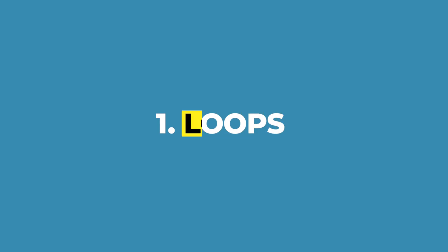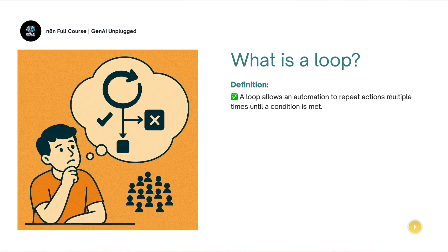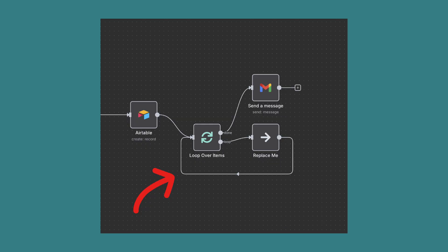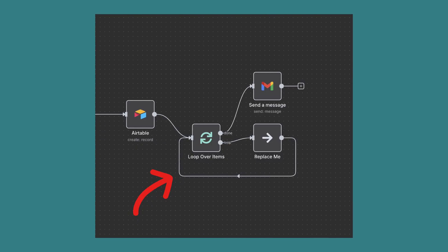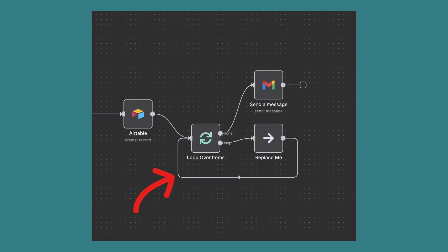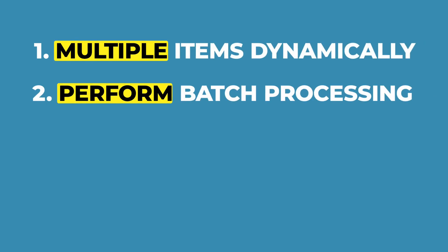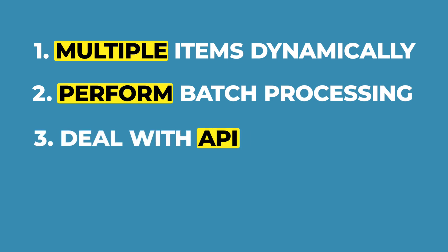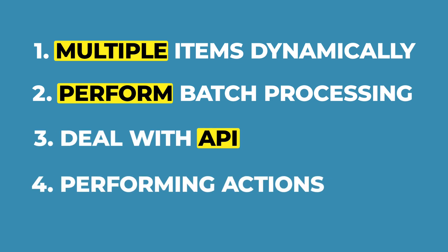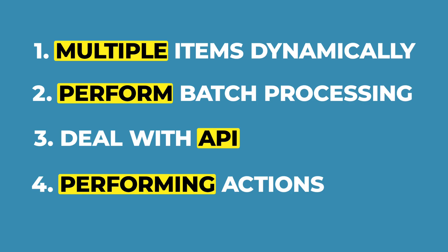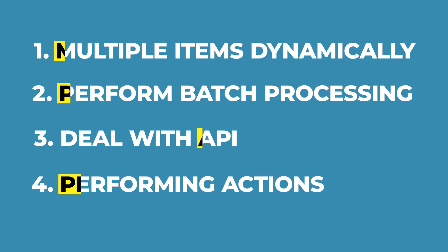So the first thing we are going to start with is loops. What is a loop? A loop allows an automation to repeat actions multiple times until a condition is met. It is implemented in N8N using the loop over items node, which is useful when you need to process multiple items dynamically, perform batch processing in a specified batch size instead of processing them all at once, deal with APIs that have rate limits, or when performing actions that require a step-by-step process.